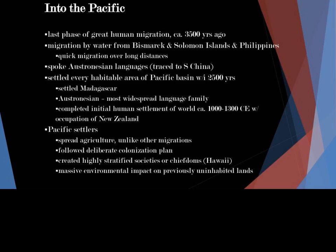Within that timeframe of about 2,500 years, they also settled Madagascar — that large island off the southeastern coast of Africa. Their widespread migrations made Austronesian the most widespread language family. The completion of the initial human settlement of the entire world was about 1000 to 1300 CE — CE stands for Common Era, our current time — and that was with the occupation of New Zealand, the last place for human settlement.